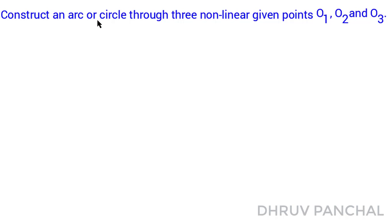Construct an arc or circle through three non-linear given points O1, O2, and O3. Take three non-linear points at any distance and we will name these points O1, O2, and O3.